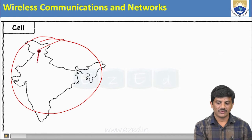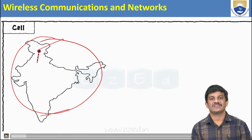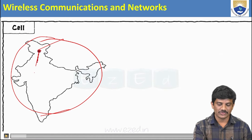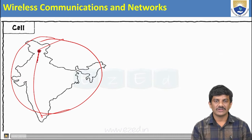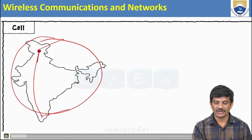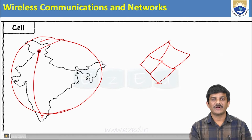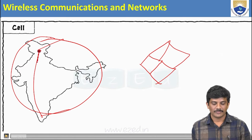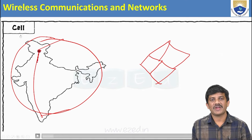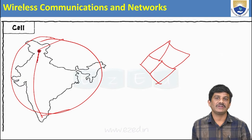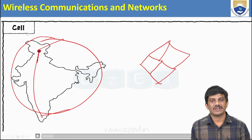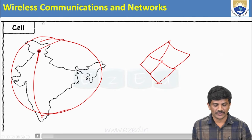For example, you are in Kashmir calling someone in Kanyakumari — how is the connection established across this geographical area? For that, we divide the particular geographical area into different cells. Each cell area has a different antenna on top, and only then can the connection be established from one person to another.